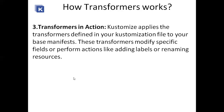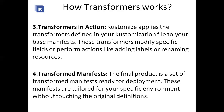Transformers in action: Kustomize applies the transformers defined in your customization file to your base manifest. These transformers modify specific fields or perform actions like adding labels or renaming resources. The final product is a set of transformed manifests ready for deployment. These manifests are tailored for your specific environment without touching the original definitions — changes are made only in the Kustomization.yaml file. This is called the transformed manifest.